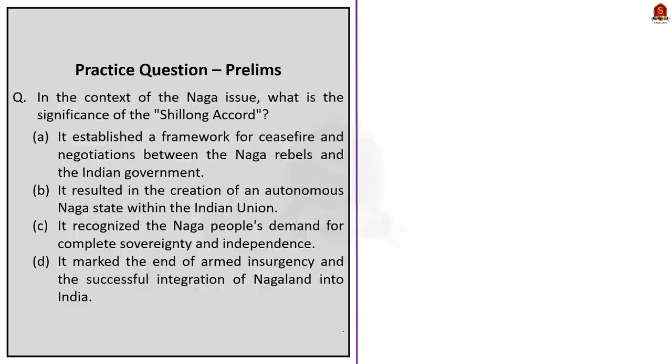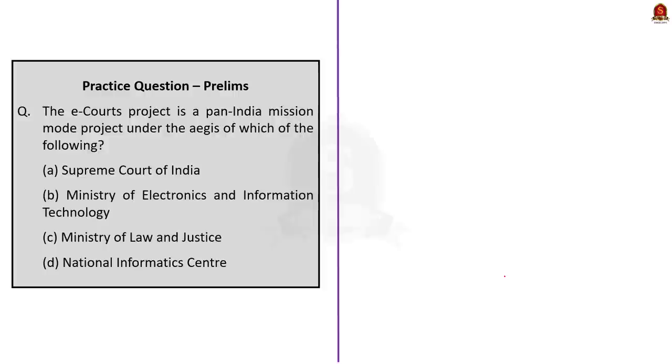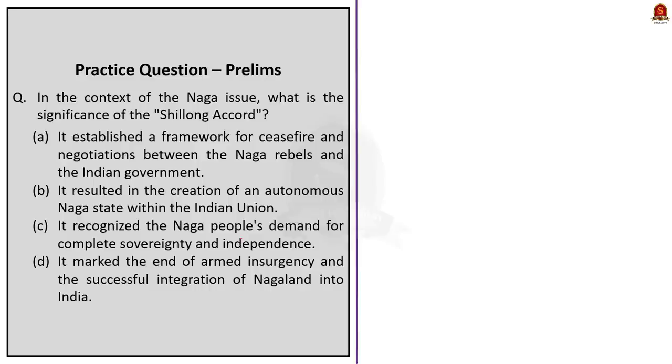Now, let us take up the practice prelims questions. We have three practice prelims questions today. Let us see them one by one. Let us take up the first question. The e-codes project is a pan-India mission mode project under the aegis of which are the following. From our discussion, we know the correct answer here is option C, Ministry of Law and Justice. Moving on to the next question. In the context of the Naga issue, what is the significance of the Shilanga card? The correct answer here is option A, Shilanga card established a framework for ceasefire and negotiation between the Naga rebels and the Indian government. From our discussion, we know that Shilanga card was signed in 1975 between the Indian government and the Naga rebels represented by the Naga National Council. The aim of this accord is to bring an end to the violent insurgency by establishing a ceasefire and creating a framework for negotiation between the Indian government and the Naga rebels. So, once again, the correct answer here is option A.